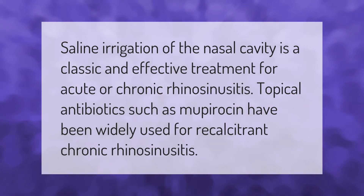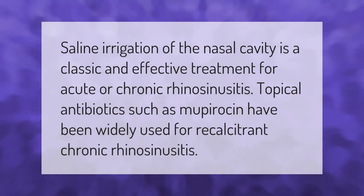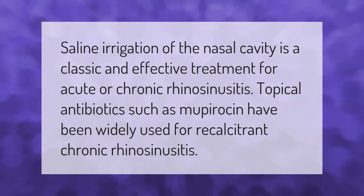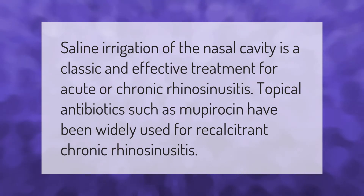Saline irrigation of the nasal cavity is a classic and effective treatment for acute or chronic rhinosinusitis. Topical antibiotics such as mupirocin have been widely used for recalcitrant chronic rhinosinusitis.